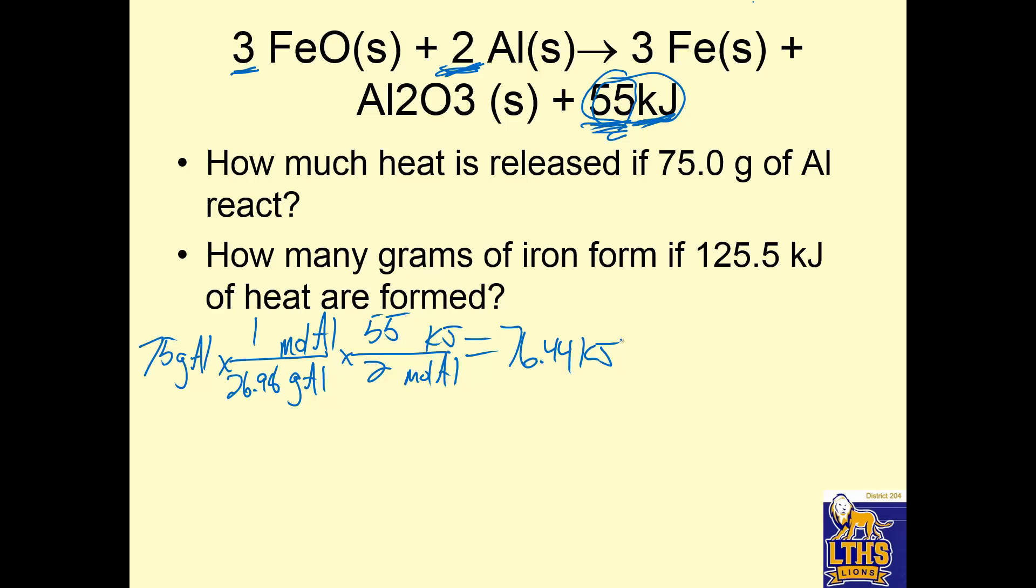How many grams of iron form if 125.5 kilojoules of heat are formed? Flip it around. 125.5 kilojoules of heat. Times dividing bar. Now just like before, even though we're not going through moles for kilojoules, there's never moles of kilojoules. I'm going to put kilojoules on the bottom to cancel the units. Remember this was grams of aluminum to cancel it, moles of aluminum to cancel it, and then kilojoules are what I have left for my final answer.